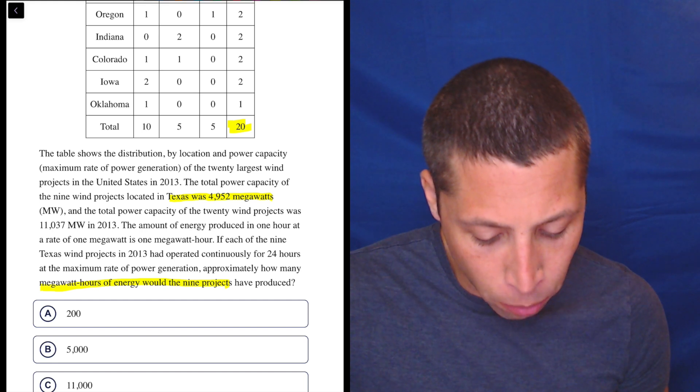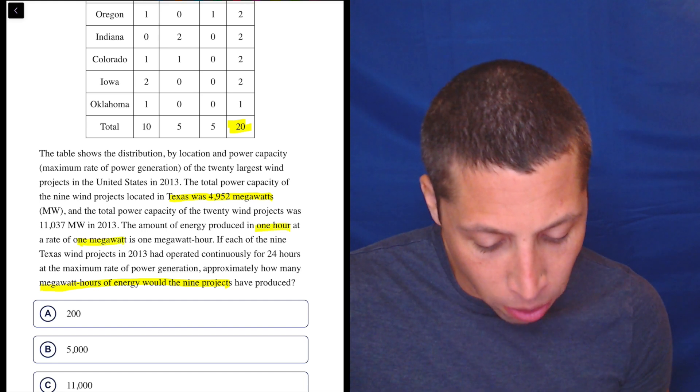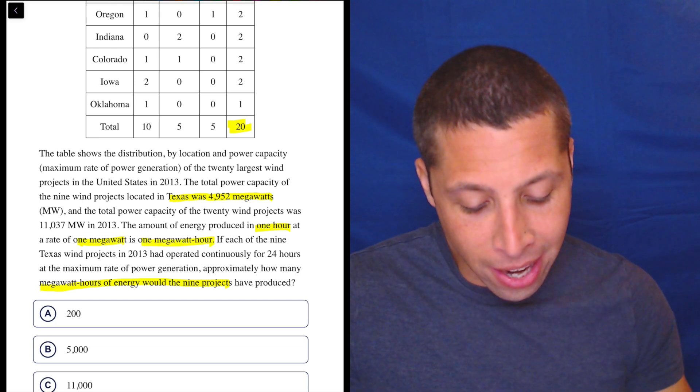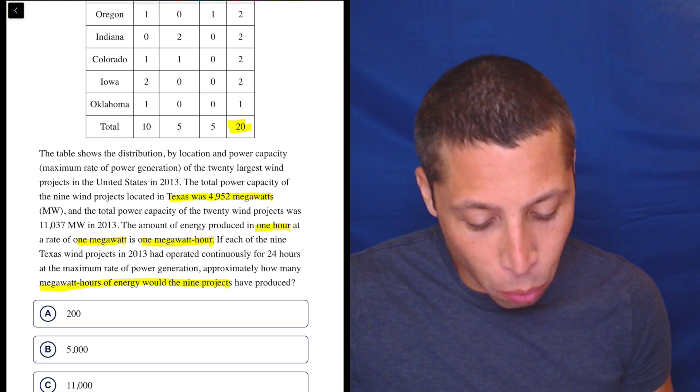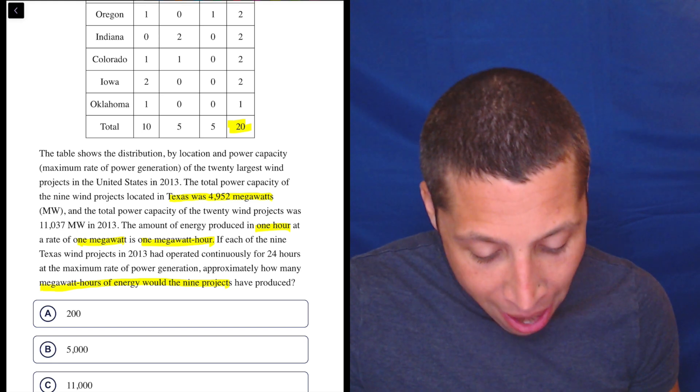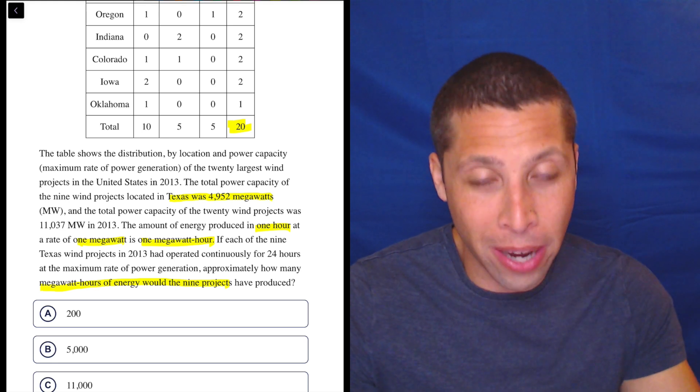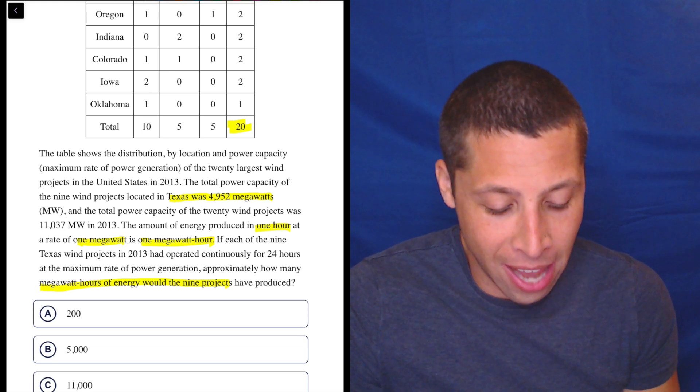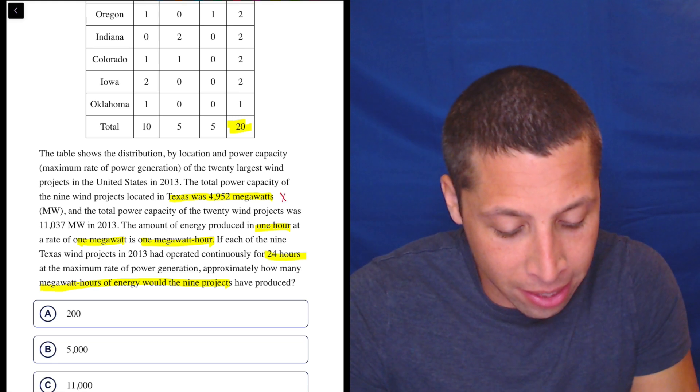Okay, and they want megawatt hours. And they say the amount of energy produced in one hour at a rate of one megawatt is one megawatt hour. So okay, they're just saying that we should multiply. Basically we take this 4,952, which is the total power capacity. And the amount of energy produced in one hour is for one megawatt is one megawatt hour. So basically we have 4,952 megawatts and now we have 24 hours. So we just multiply this by this.